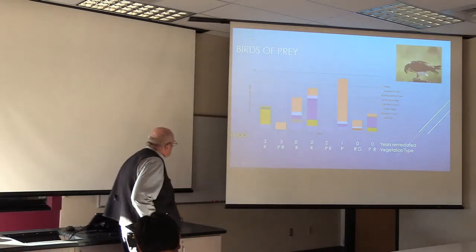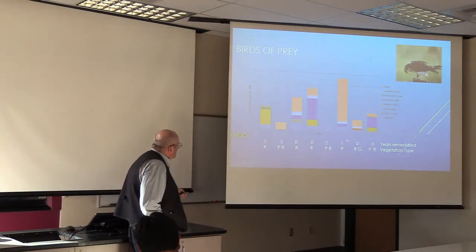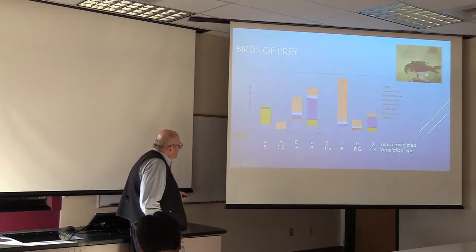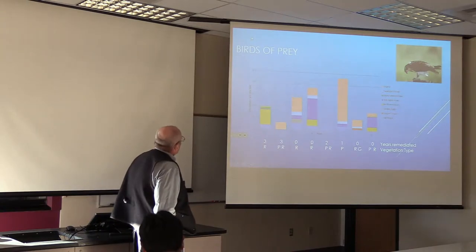And then after two years they've got to come in and remove all that and whether the deer leave it alone or not, we'll have to find out. They protected them with plastic screens around them. So then this is the year since remediation. And then this is riparian. This one is pond, riparian, riparian, riparian, pond, riparian, pond, riparian, grassland, and pond, riparian. And these are the birds of prey.